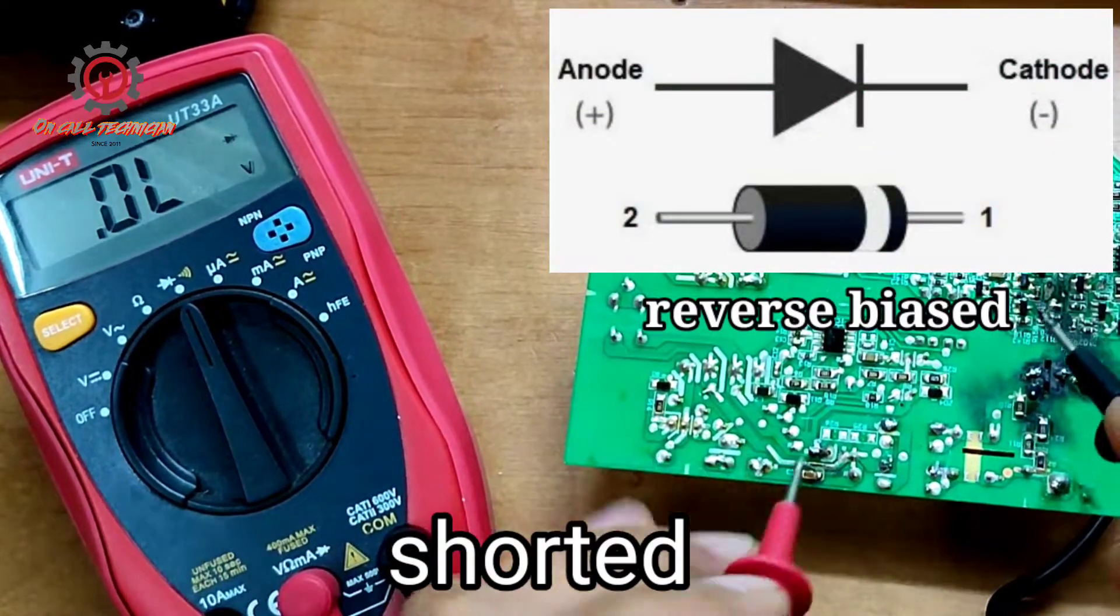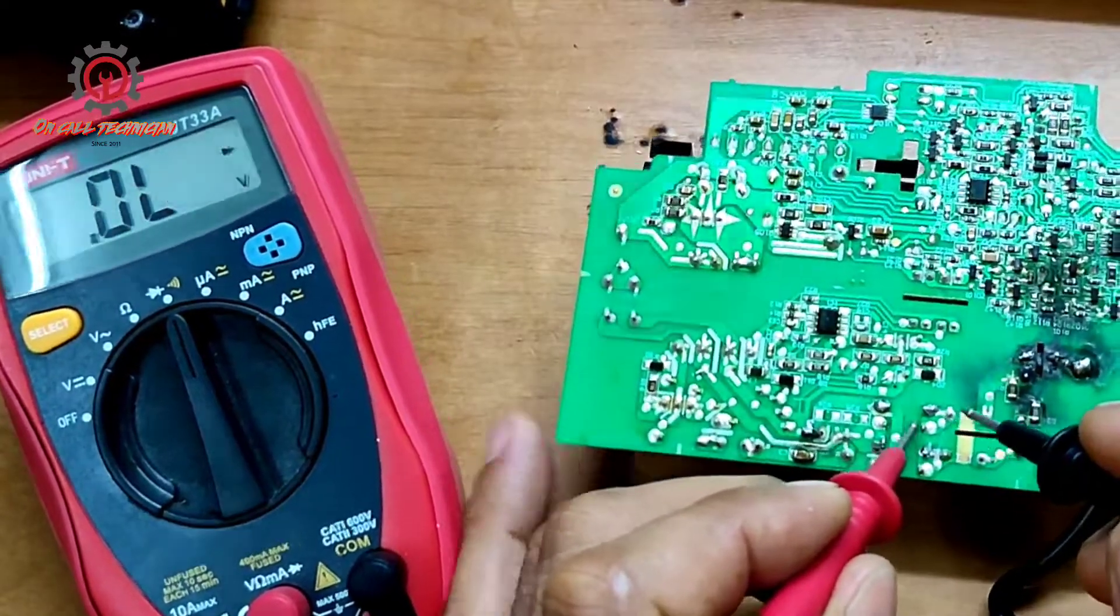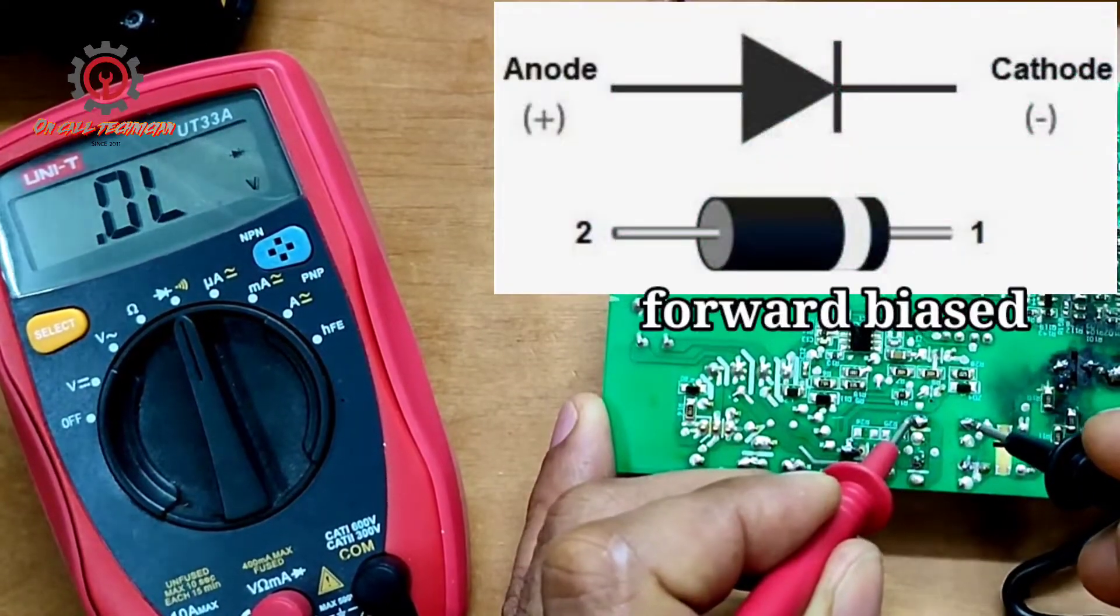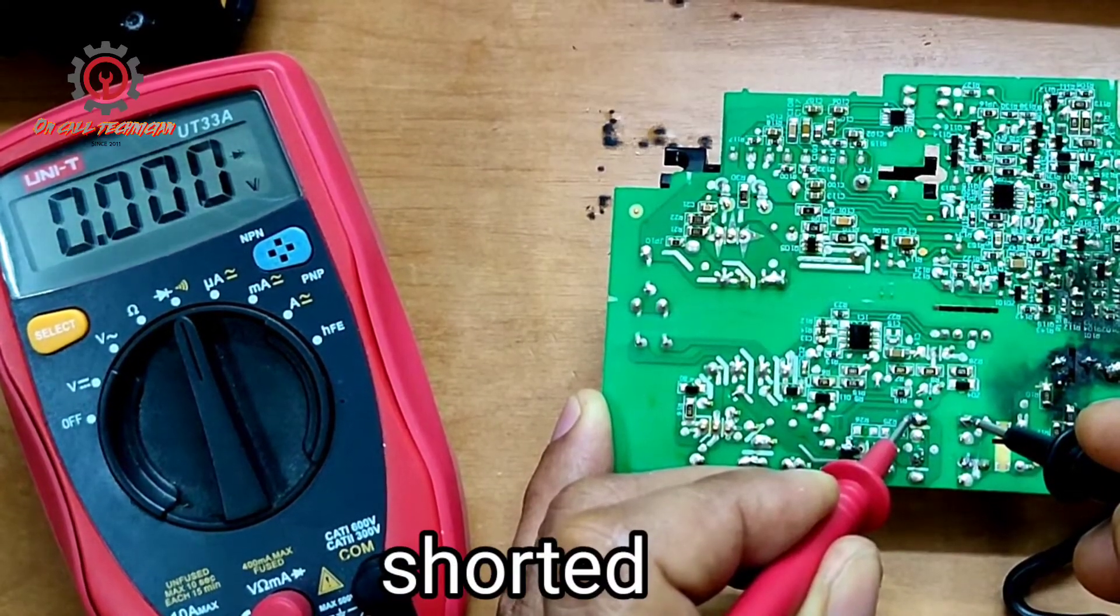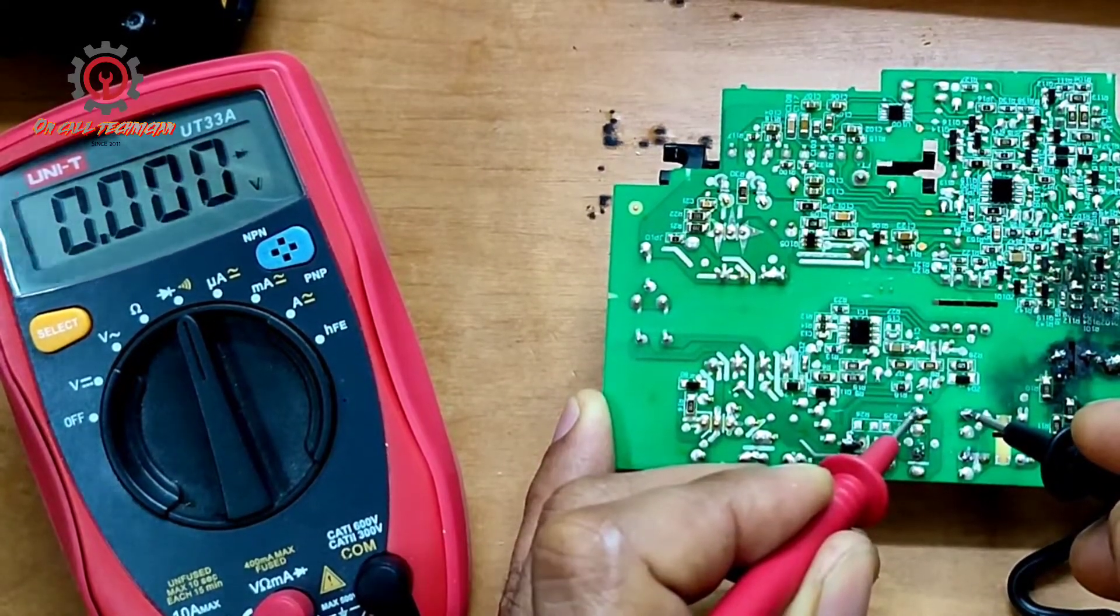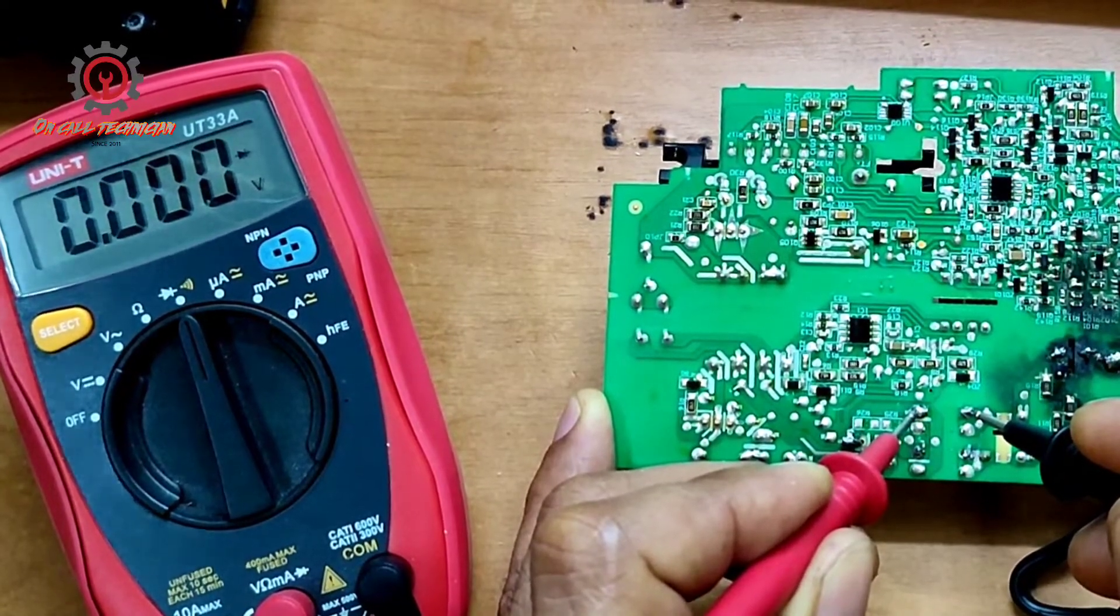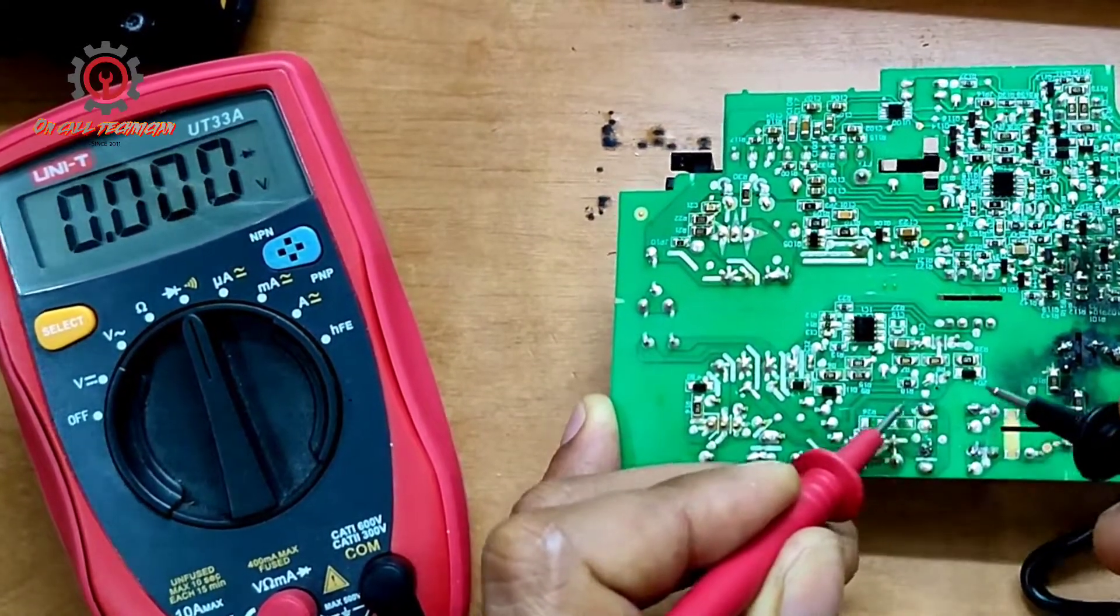Just reverse the test probe and take a look. This one here shows a bad diode. This is a shorted diode, guys.